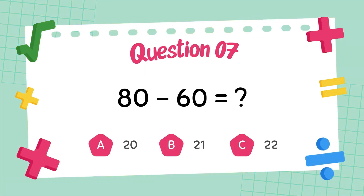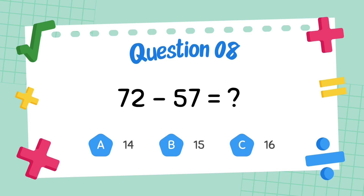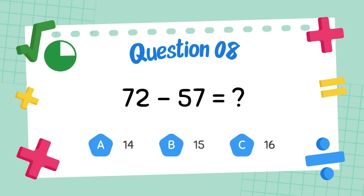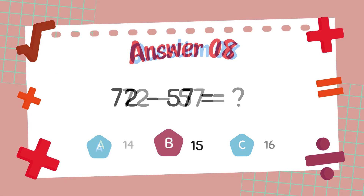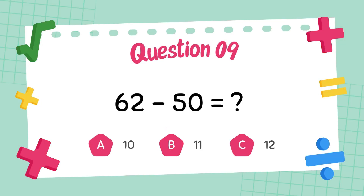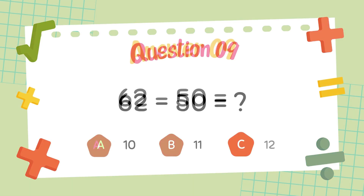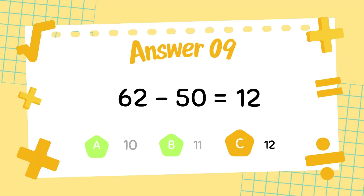What is 80 minus 60? The answer is 20. What is 72 minus 57? The answer is 15. What is 62 minus 50? The answer is 12.